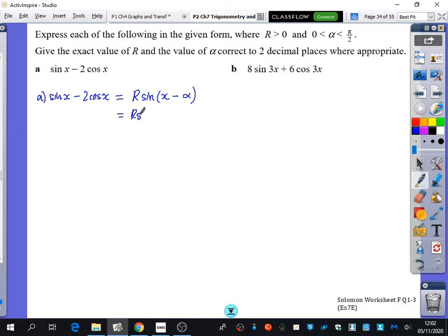So I'll do the expansion, and that's going to be r sine x cos alpha minus r cos x sine alpha. And I'm going to see if I can pick these values out without having to do any of those extra bits. So r cos alpha, who thinks they can tell me what r cos alpha is? One, it's just one, and r sine alpha is just two. So r is equal to the square root of one squared plus two squared, which is the square root of five.